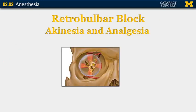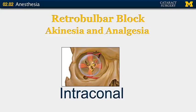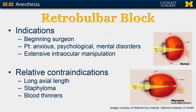Next, we will talk about retrobulbar block. As mentioned, this is placed in the intraconal space. Indications include beginning surgeons, patients who are anxious or have psychological and mental disorders, or if you anticipate extensive intraocular manipulation. Relative contraindications include patients with long axial length, a staphyloma — which is a thinning or protrusion of the sclera — and patients on blood thinners. Although studies do not show that blood thinners increase the risk of bleeding, when a bleed occurs it is usually more severe.